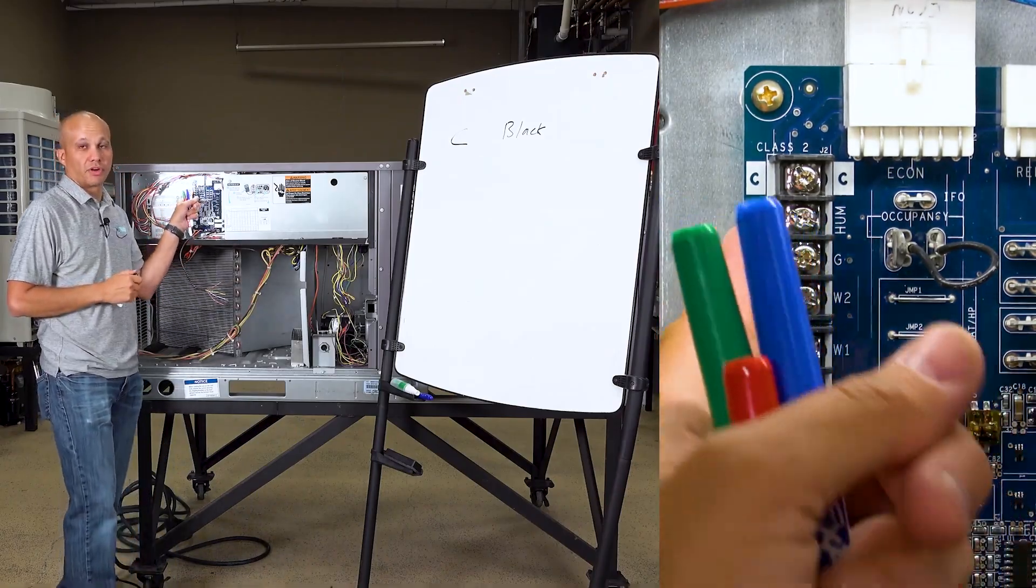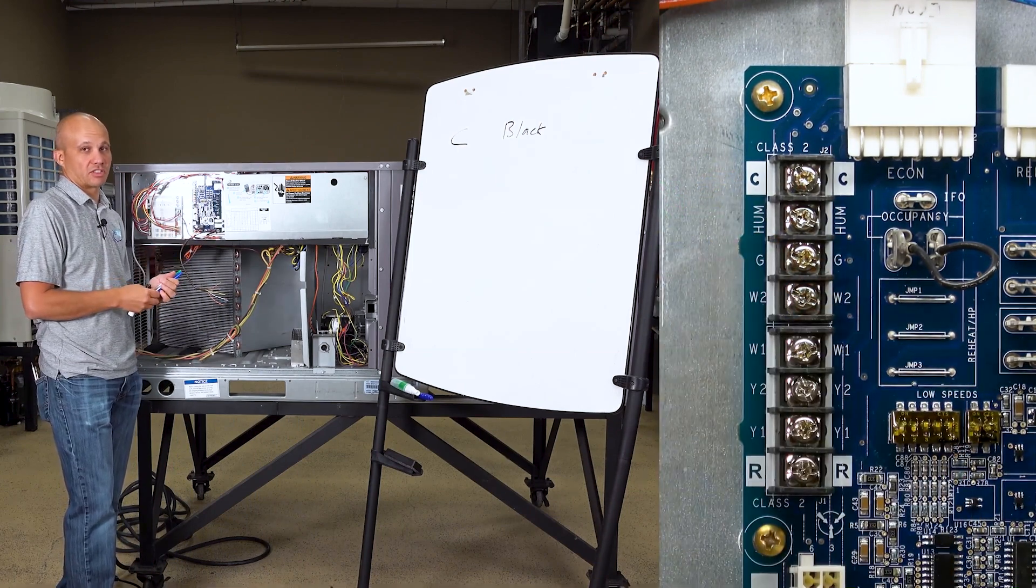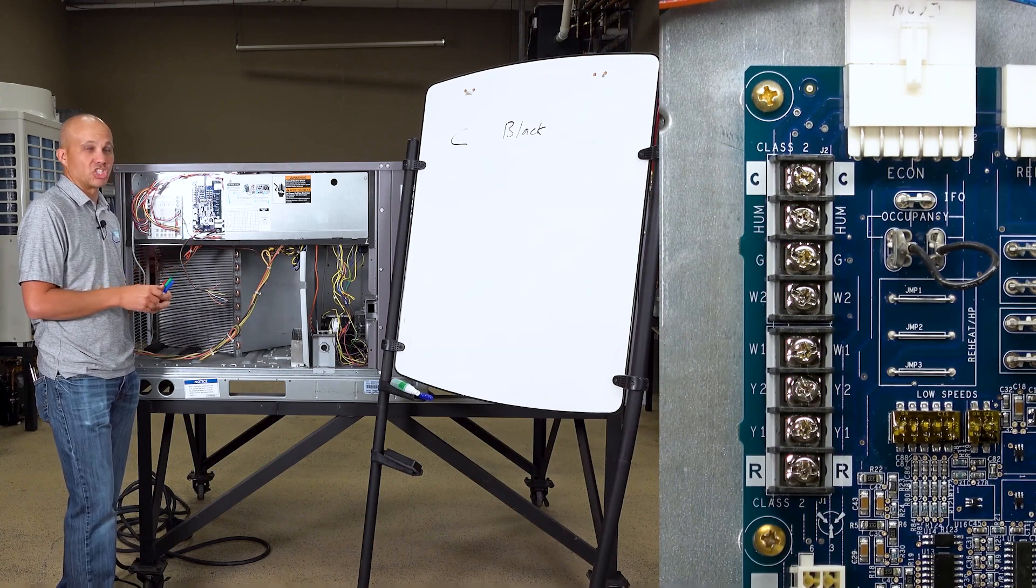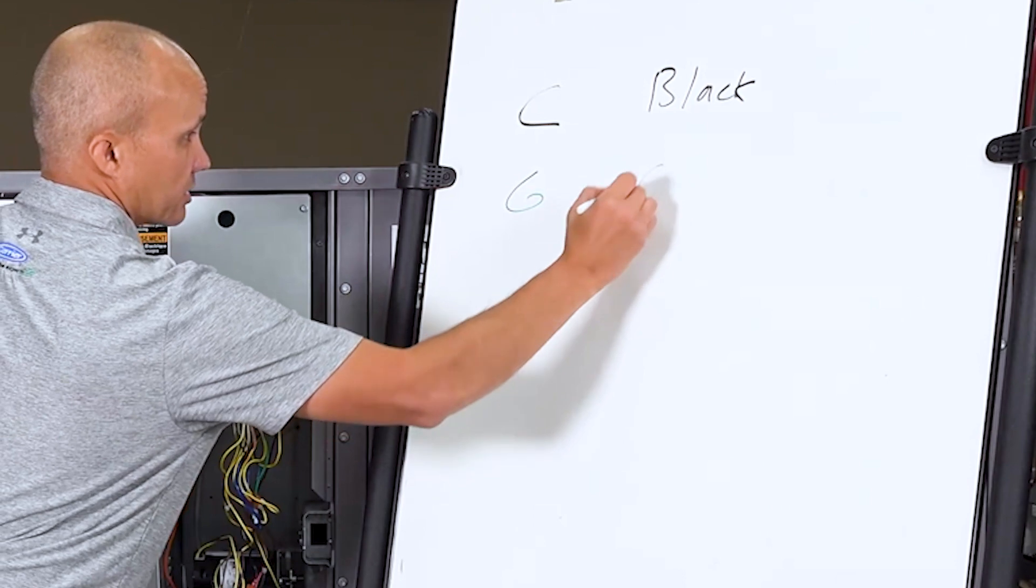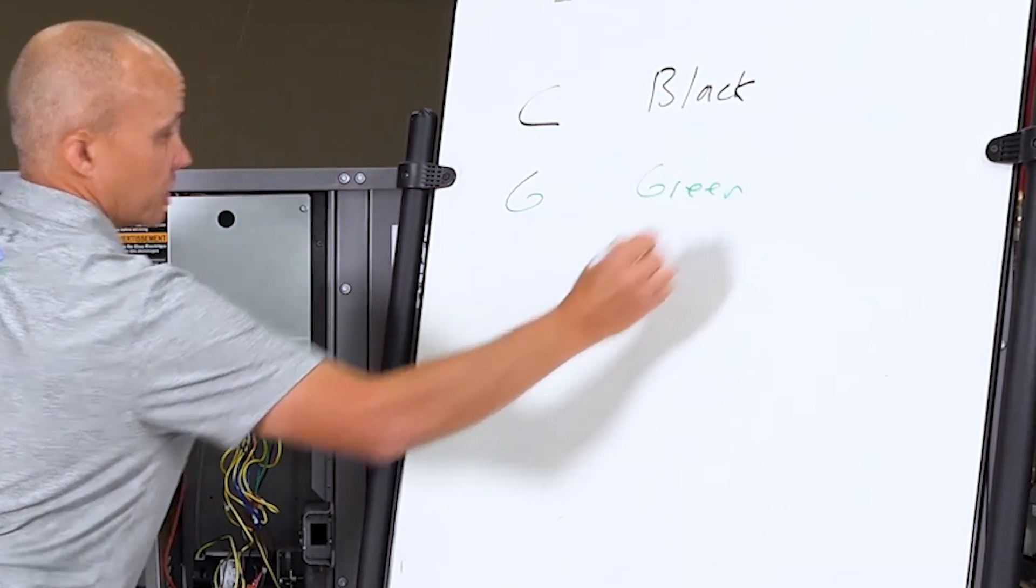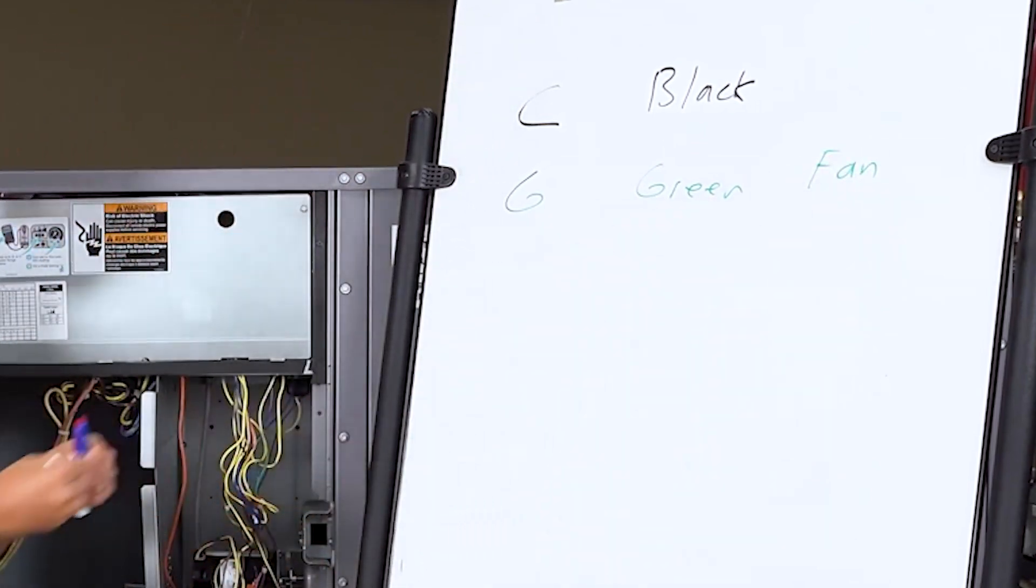The next one on here is a hum terminal for dehumidification. We're not using that in this application, that's not a standard thing, so we don't need that. The next one is G. G is going to be green, that's why it's called G, and G is going to be for our fan. G is always fan. I should also probably say in this case the C is going to be common, we'll keep it consistent on the board there.